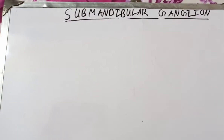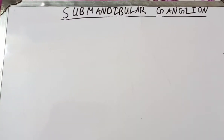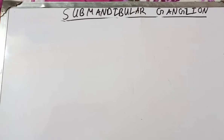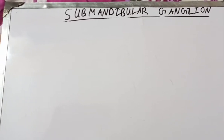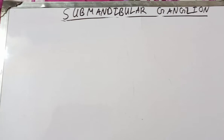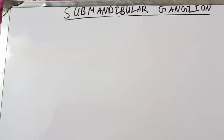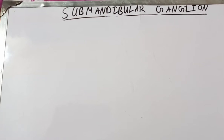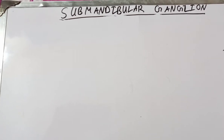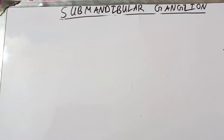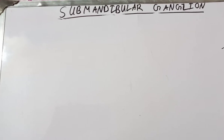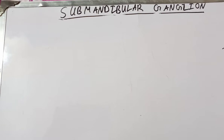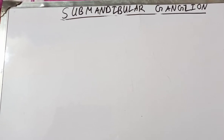Welcome students. Today we will talk about the submandibular ganglion. The submandibular ganglion is a peripheral parasympathetic ganglion concerned with the secretomotor supply to the submandibular and sublingual salivary glands. Topographically, the submandibular ganglion is related to the lingual nerve — this means the fibers of the lingual nerve do not relay here; they just provide support and suspend the ganglion from the lingual nerve.